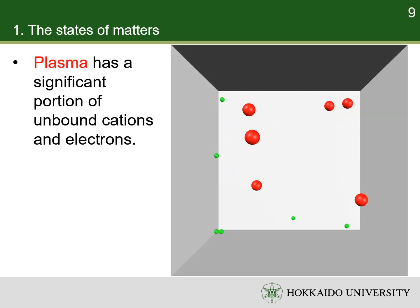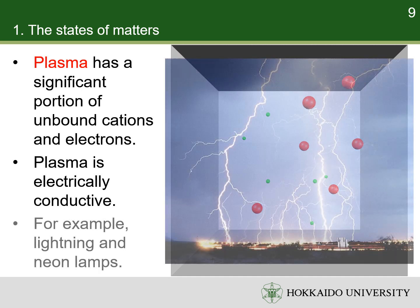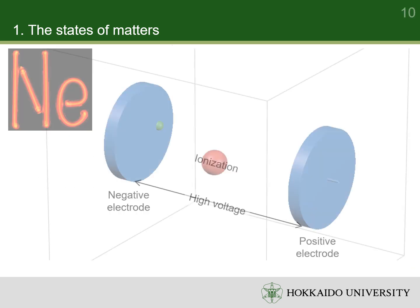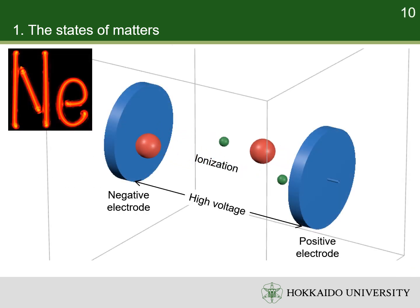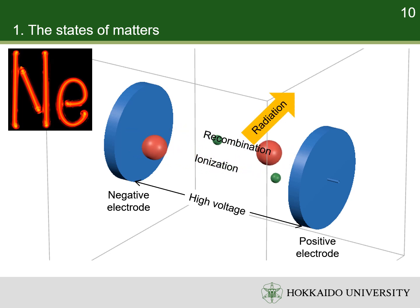Plasma is characterized by the presence of a significant portion of unbound cations and electrons. The presence of charged particles makes plasma electrically conductive. Lightning and neon lamps are commonplace generators of plasma. In a neon lamp, neon atoms are continuously ionized to neon cations and electrons by a high voltage. Driven by the electric field, the cations move to the negative electrode and the electrons move to the positive electrode, conducting the electric current. The cations and electrons also continuously recombine to an excited state of neon atoms, which then relax to lower energy states, and meanwhile release their energy in the form of light.